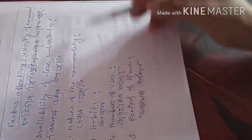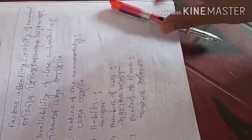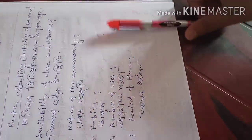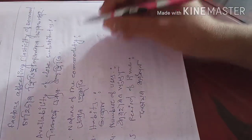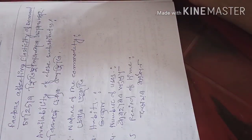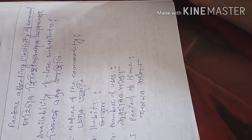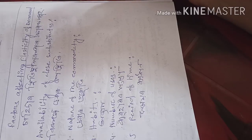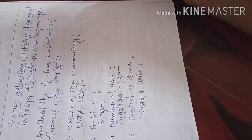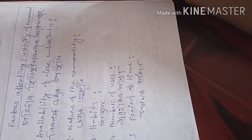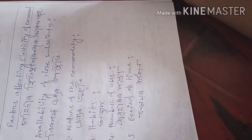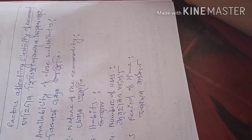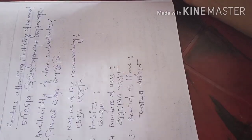The second factor is the nature of the commodity. There are two types of commodities: necessary goods and luxurious goods. If the goods are necessary for life, then the elasticity will be less, because whatever the price of the basic or necessary goods, your demand may not change — you have to purchase it regardless of the price.